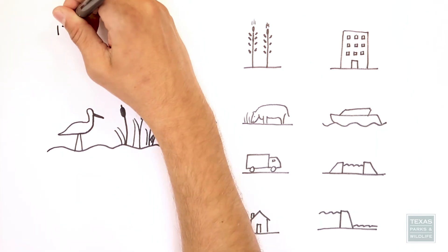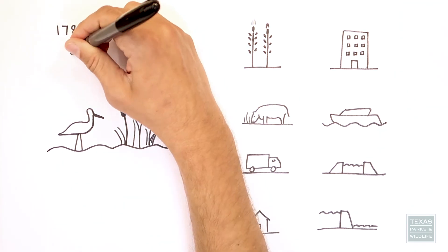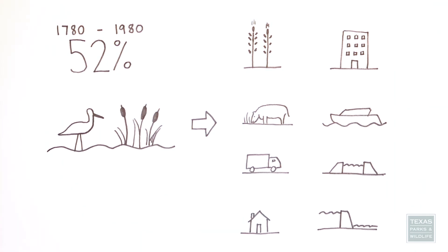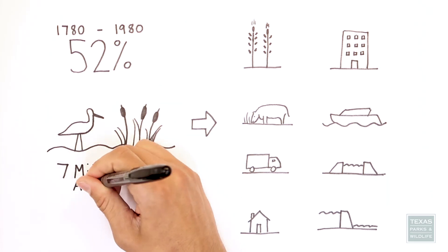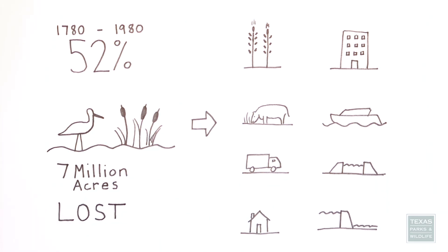In the time between 1780 and 1980, 52% of the wetlands, or more than 7 million wetland acres in Texas, were lost. That's nearly the acreage of Dallas, Fort Worth, Houston, and San Antonio combined.